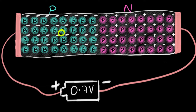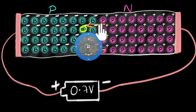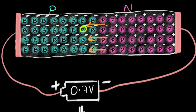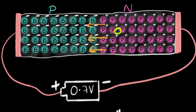Here's why: even before we attach the battery, there's a depletion region with a strong electric field acting as a barrier, preventing the hole from crossing the junction. The battery is only supplying the hole enough energy to overcome that barrier. At 0.7V, it barely gives the hole enough energy to overcome the barrier — it doesn't have any energy left after that to carry it all the way to the other side. So what's really causing the current is the big question.